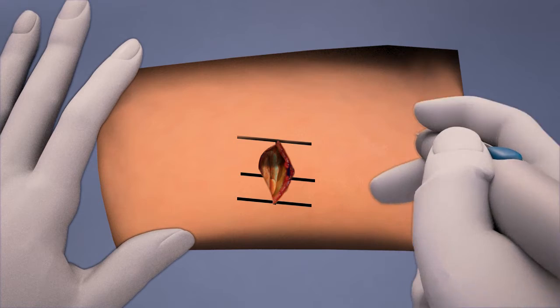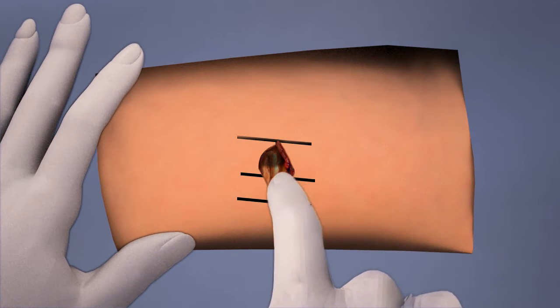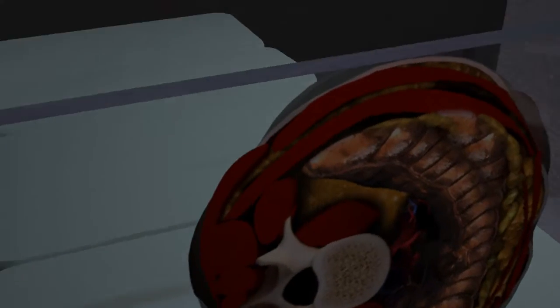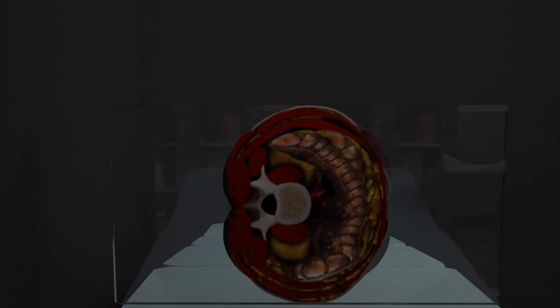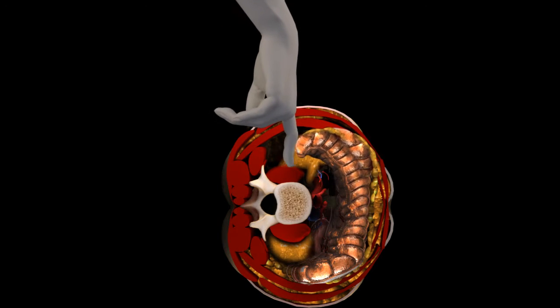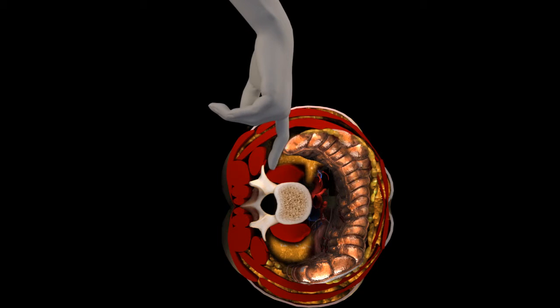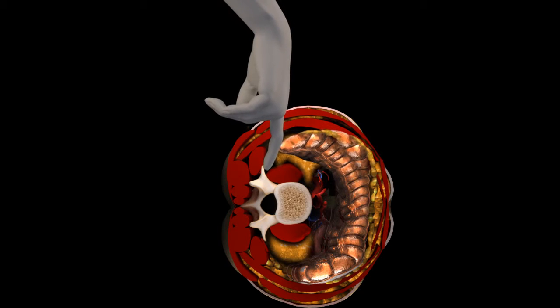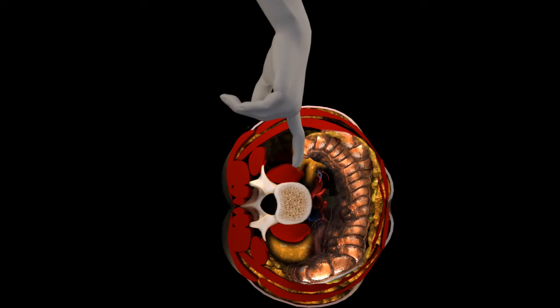Use blunt dissection through the oblique muscles and transversalis fascia to enter the retroperitoneal space. Sweep a finger anteriorly to clear away retroperitoneal fat and to ensure the peritoneum is situated anteriorly. Palpate to locate the transverse process and the psoas muscle.